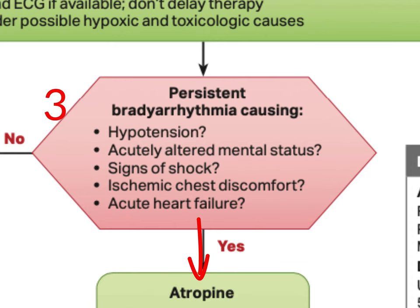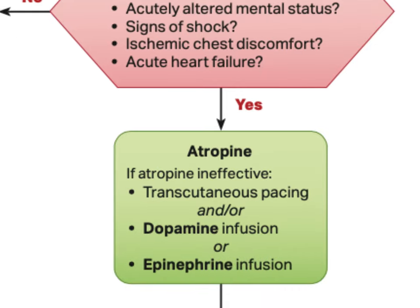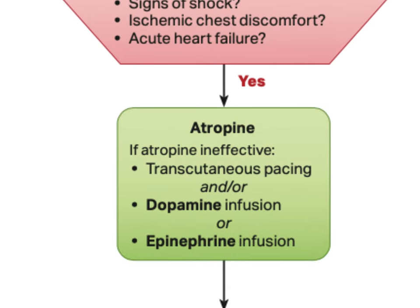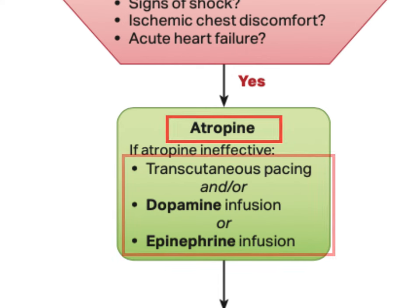If based on our assessment we decide our patient is unstable, we move to the treatment box, which recommends atropine as the most appropriate intervention. If atropine is ineffective, we move on to one of the following three options: transcutaneous pacing, or a dopamine or epinephrine infusion.